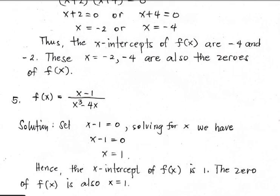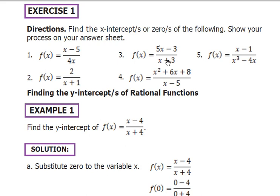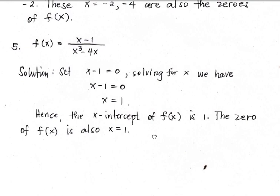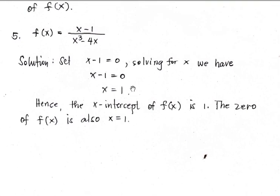For Number 5: f(x) equals (x minus 1) all over (x cubed minus 4x). We find that the x-intercept, or zero, or root of the numerator is x equals 1.